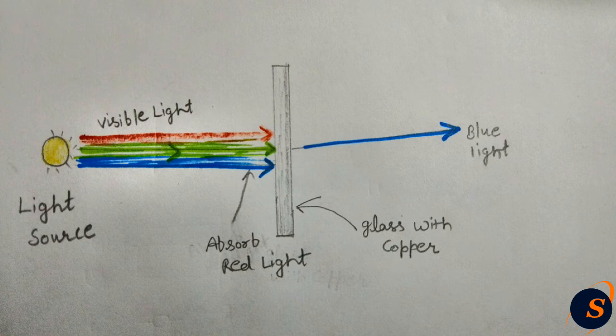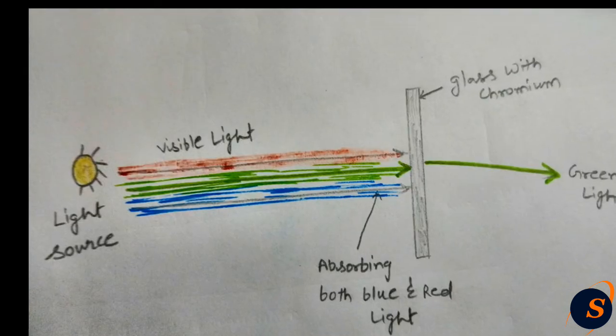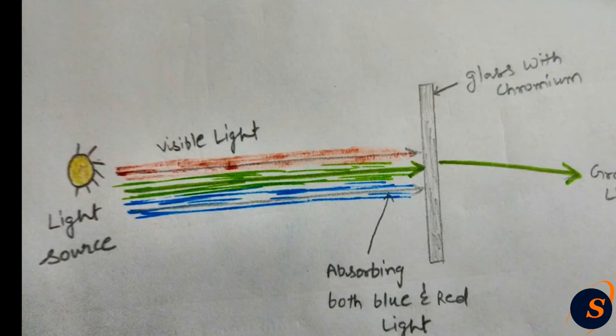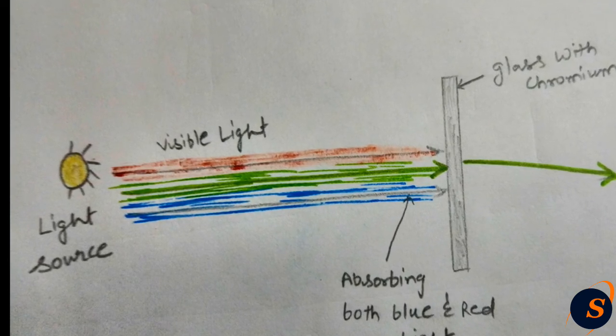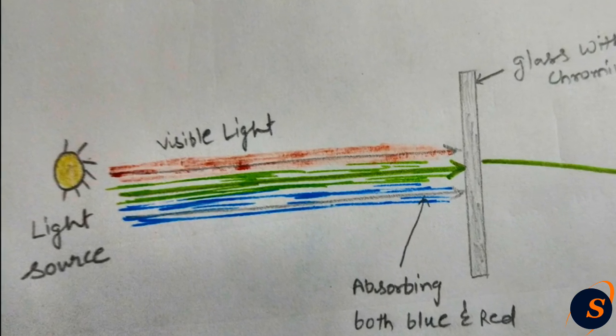So the light passing through will tend to look blue. And if we add chromium to the glass, it will cause it to absorb both red and blue energies of the light, and when you look through the glass, objects will appear green.